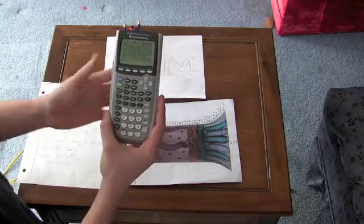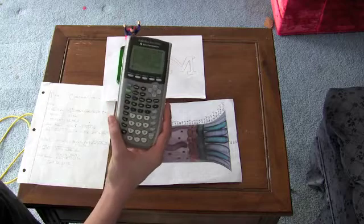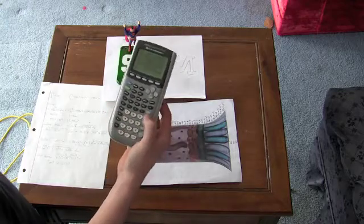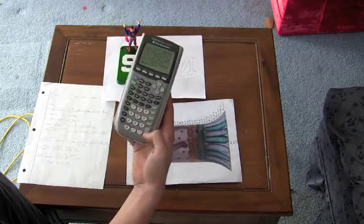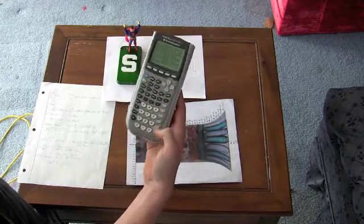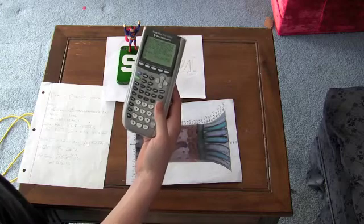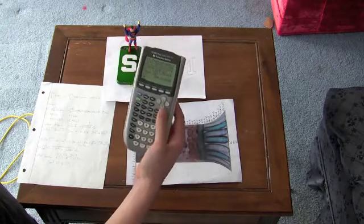And it gives us 1813.7 units squared, which we then need to multiply by 0.34 squared, because it's square units and our scale factor is 0.34. So that gives us 209.66 centimeters squared.